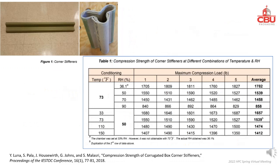Corner stiffeners as shown are available commercially and are used for boxes that need to carry heavy loads. In this experiment, a stiffener was tested at different temperature and humidity levels. The compression strength of this stiffener varies from about 800 pounds to almost 1,800 pounds. Adding it to the four corners of a box increases the box stacking strength tremendously.